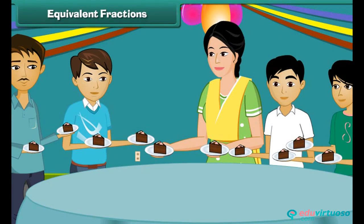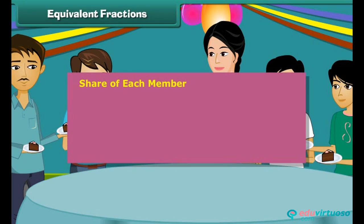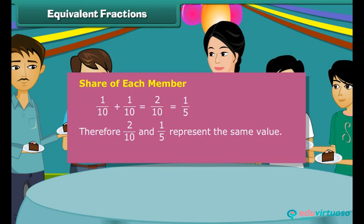Equivalent fractions: let us take a second look at Rishabh's birthday cake. It is divided into ten equal parts. Suppose none of Rishabh's friends is interested in the cake. Hence Rishabh offers two pieces of the cake to each member of his family. Each member gets one by ten plus one by ten, which equals two by tenth of the cake, which is the same as one by fifth of the cake. Therefore, two by ten and one by five represent the same value. Such fractions are called equivalent fractions.